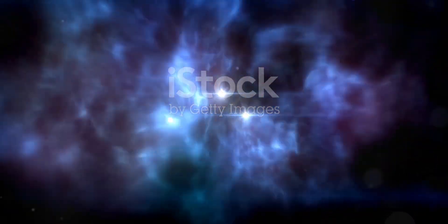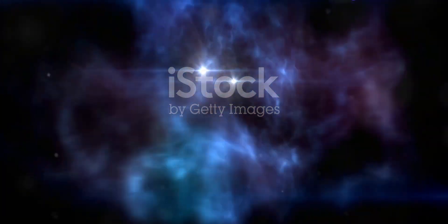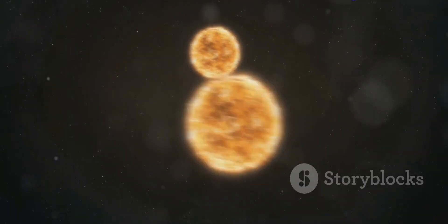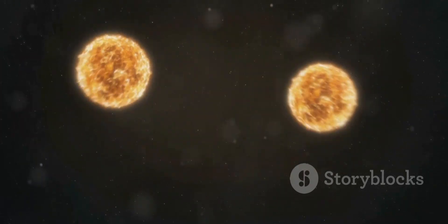Not all supernovae result from the collapse of a massive star's core. Another type of supernova, called a thermonuclear supernova, occurs in binary star systems. A binary star system is a system where two stars orbit around a common center of mass.